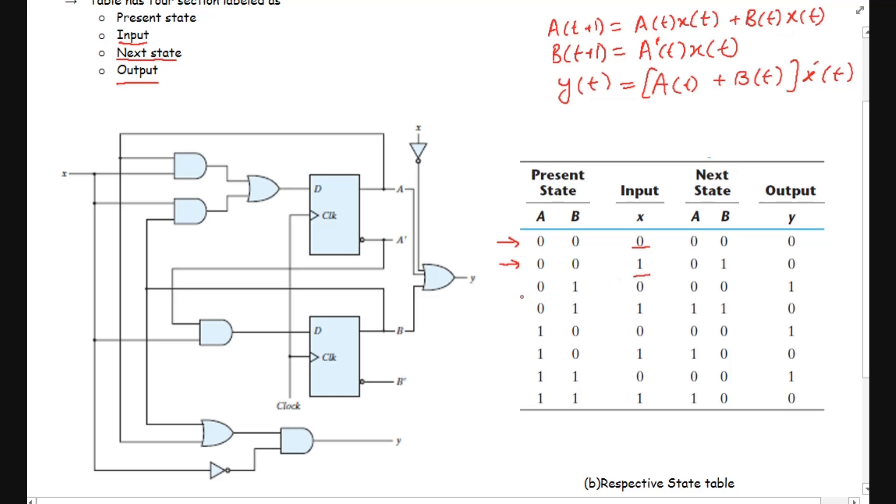Then we need to consider 0 1 for inputs 0 and 1. Then again we need to consider for the states 1 0 for the inputs 0 and then 1. And finally, for the states 1 1 we need to have all the possible combinations of inputs which is 0 and 1.